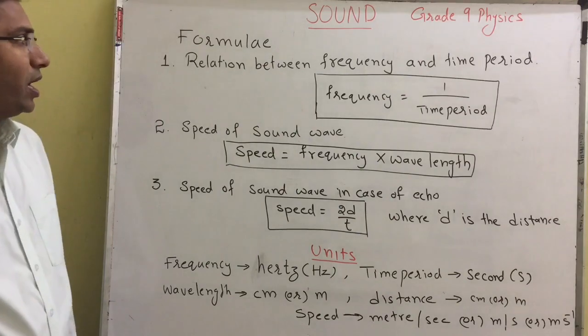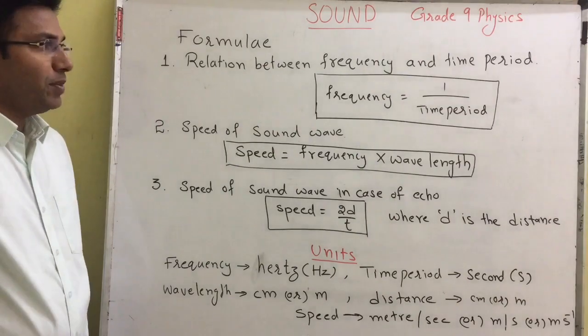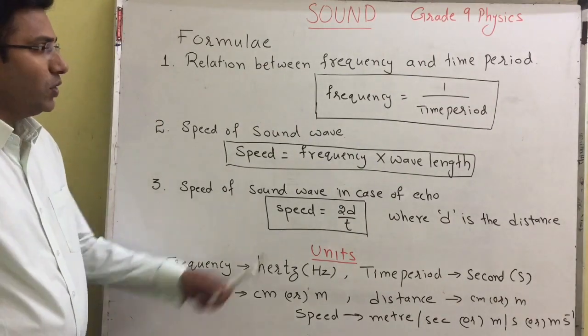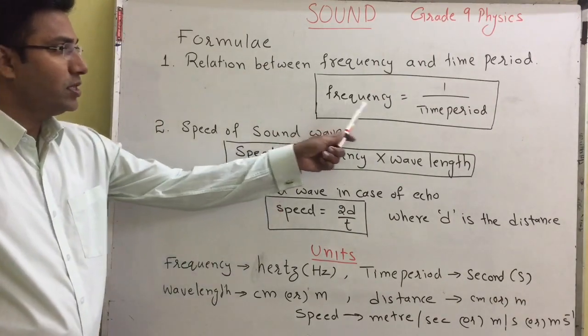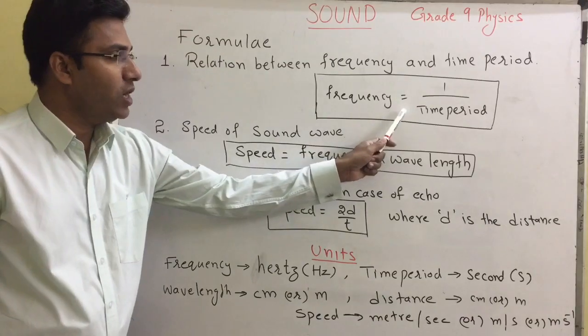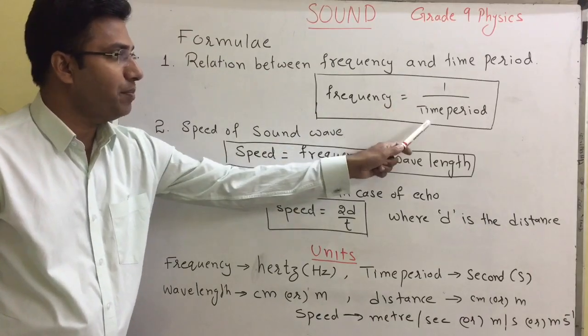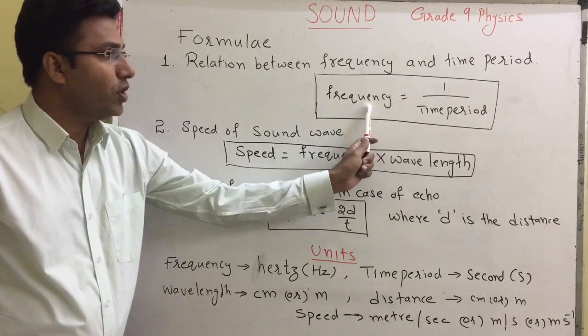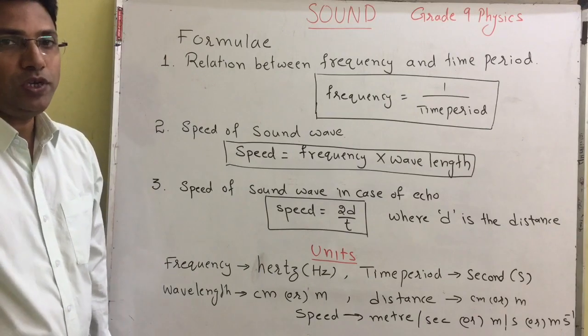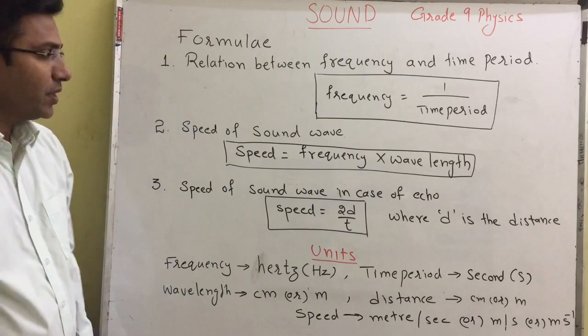The first formula is the relation between frequency and time period. Frequency is equal to 1 divided by time period. Frequency and time period are inversely proportional to each other.